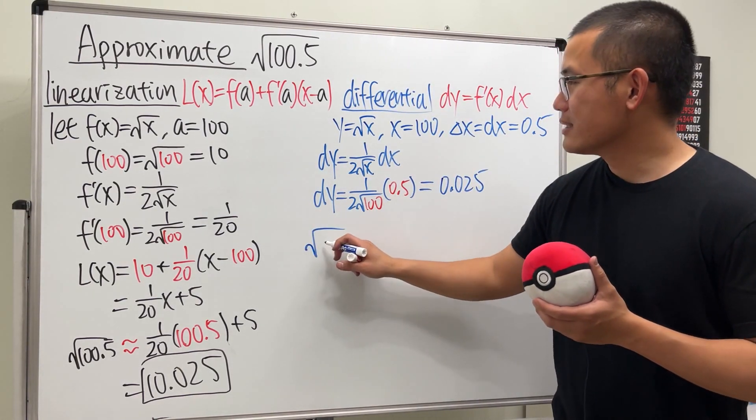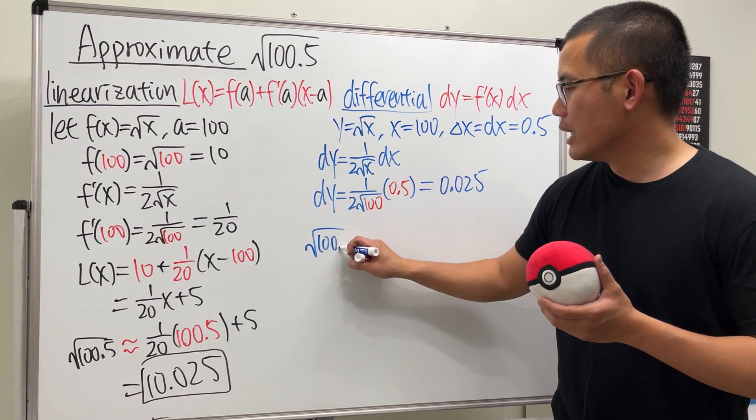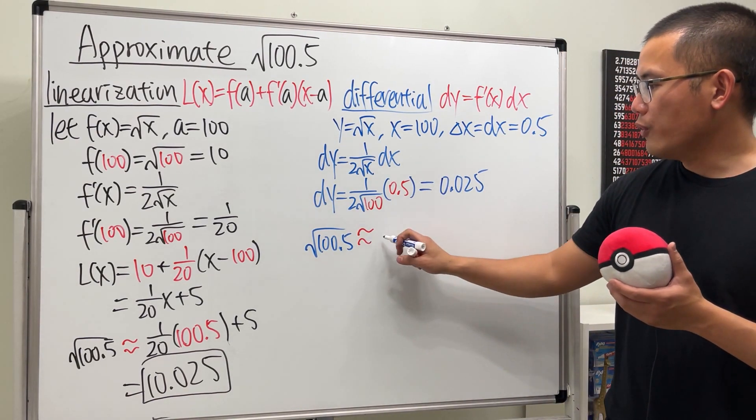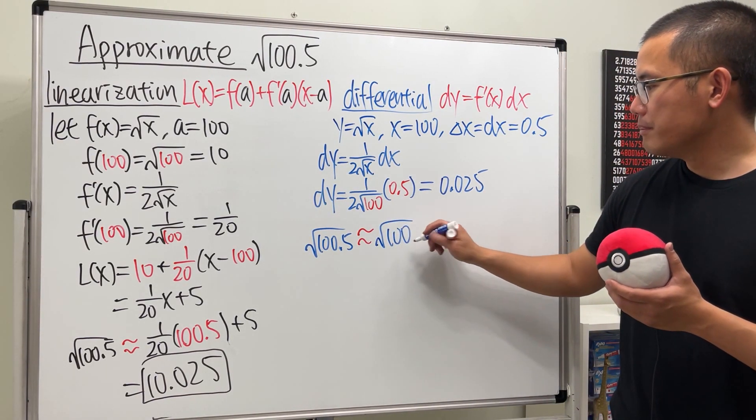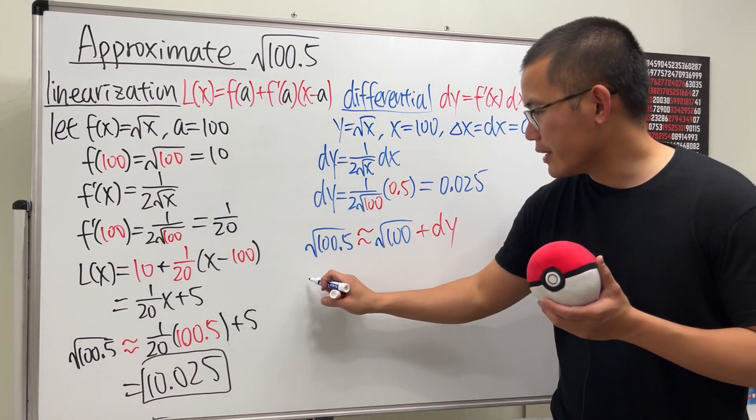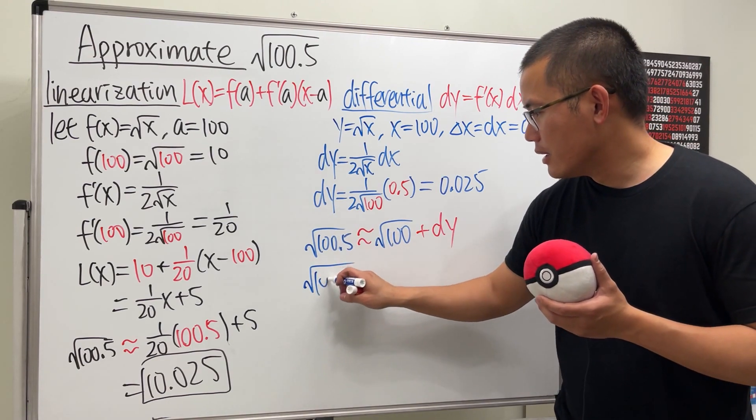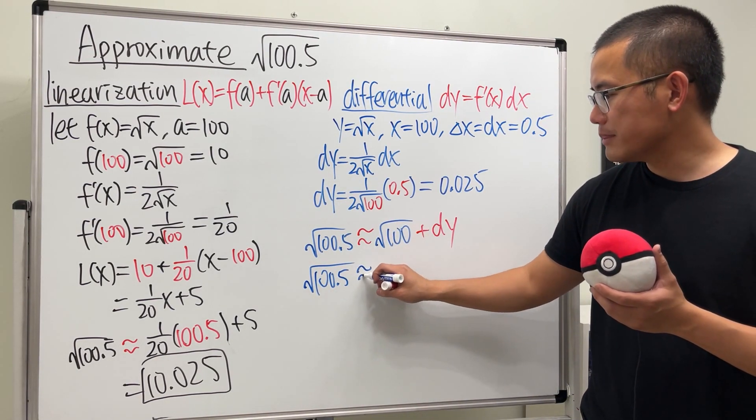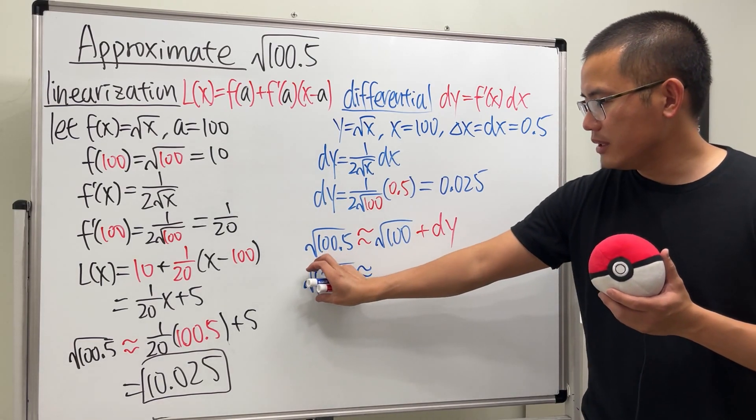And then here, this tells us square root of 100.5 is approximately, we go from square root of 100, but we add the dy value. And this right here, I'm just going to write this down a couple more times, and that's why I am still using the approximating symbol, because I'm reading this across.